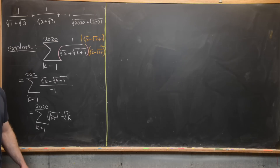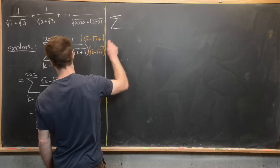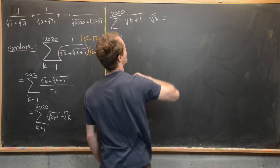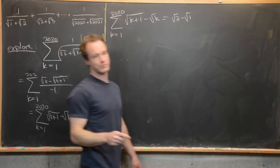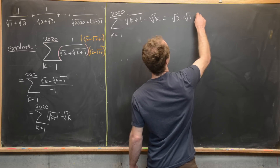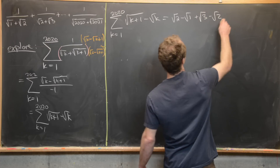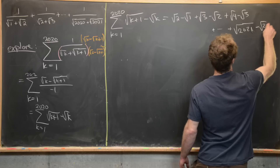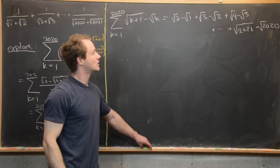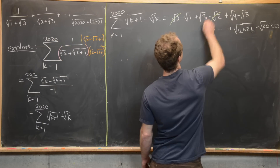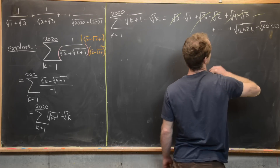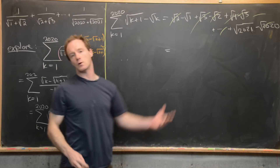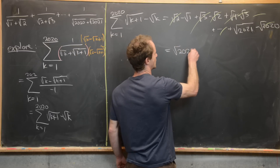This form reveals a telescoping series. Writing out terms: (√2 - √1) + (√3 - √2) + (√4 - √3) + ... + (√2021 - √2020). Successive intermediate terms cancel — the √2 cancels, the √3 cancels, and so on — leaving √2021 - √1, which equals √2021 - 1.